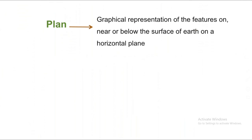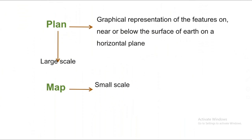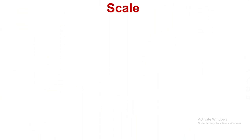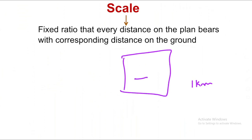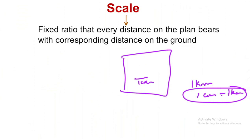Graphical representation is a plan, or the surface, shown on a horizontal plane. If we draw on the map, we select a large scale representation. A map uses a small scale representation. Scale is the fixed ratio — every distance on the plan corresponds to the distance on the ground. For example, if the ground distance is 1 km and the plan shows 1 cm, then the scale is 1 cm equal to 1 km.